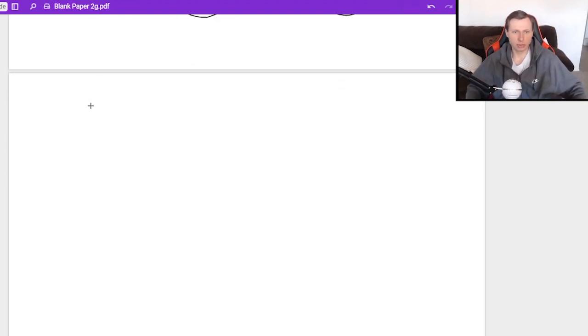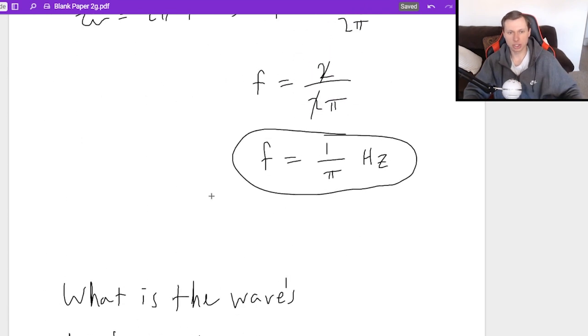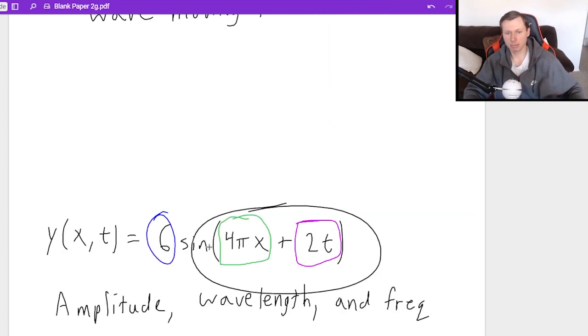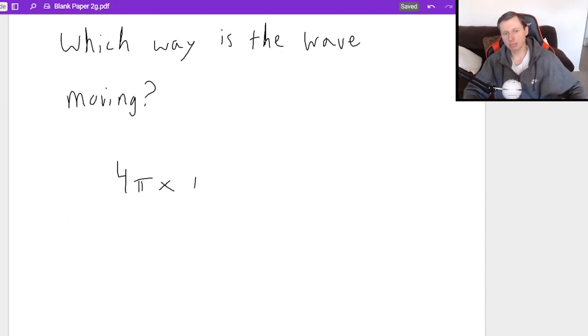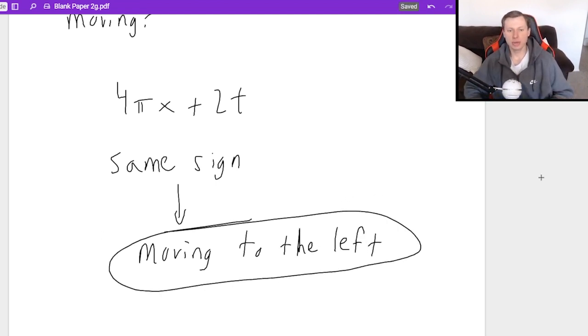And my last question for this one would be, which way is the wave moving? Is it left or right, forwards or backwards? And if you remember that, then all you need to do is look back at the equation, specifically the 4 pi x plus 2t part. So since 4 pi x plus 2t, they have the same sign. Therefore, the wave is moving backwards or we'll say to the left, moving to the left. And if they were opposite signs, then it'd be moving to the right. And there we go.